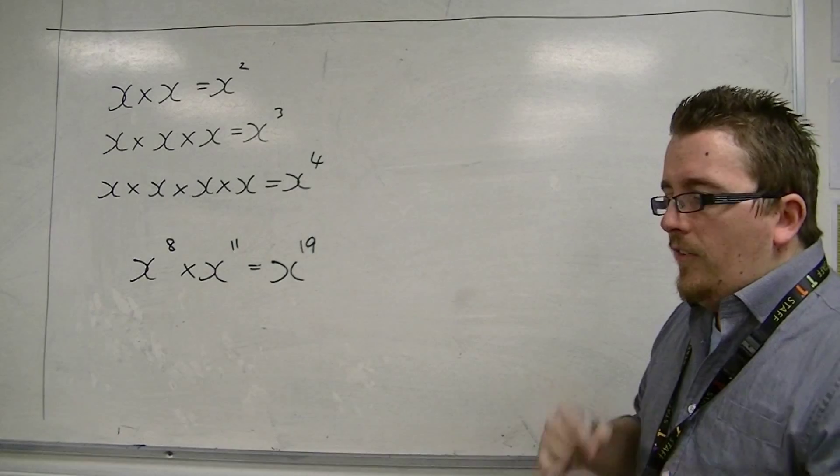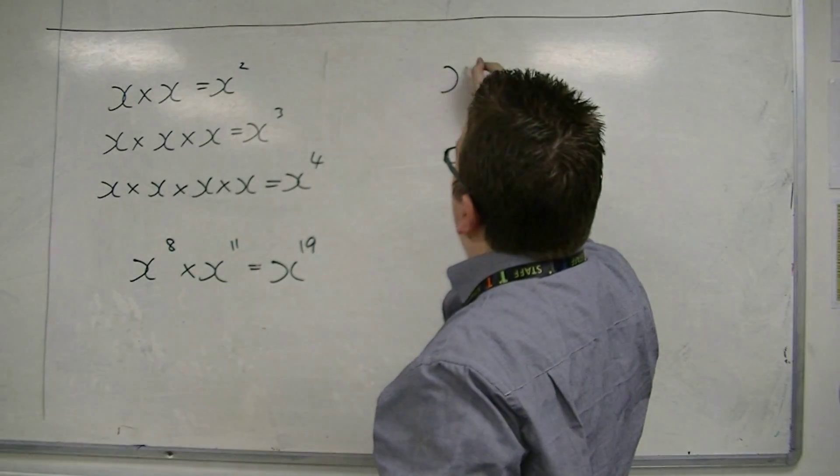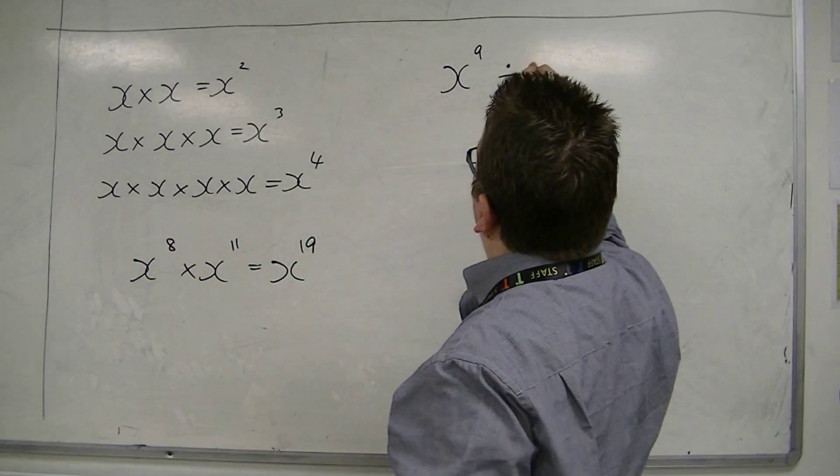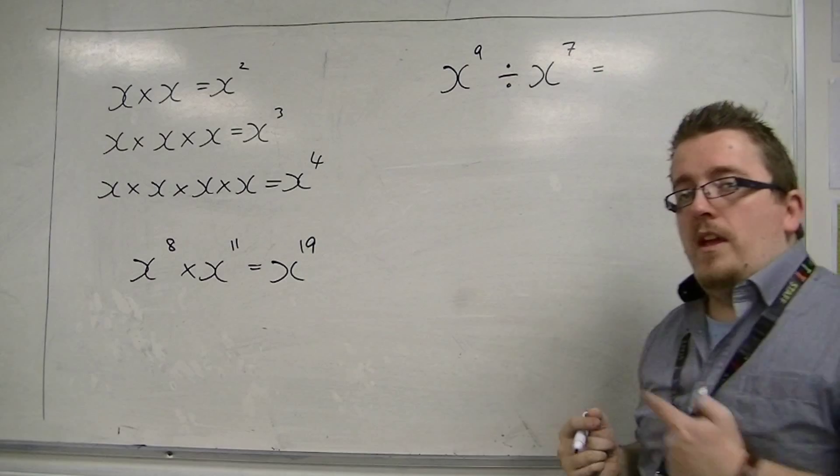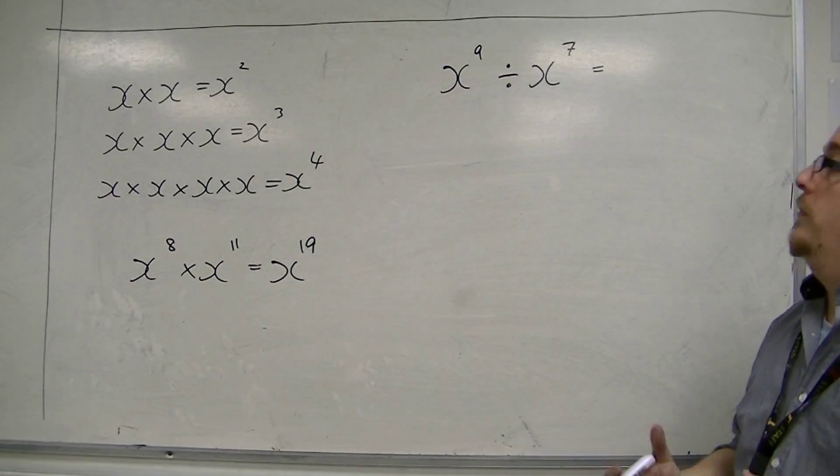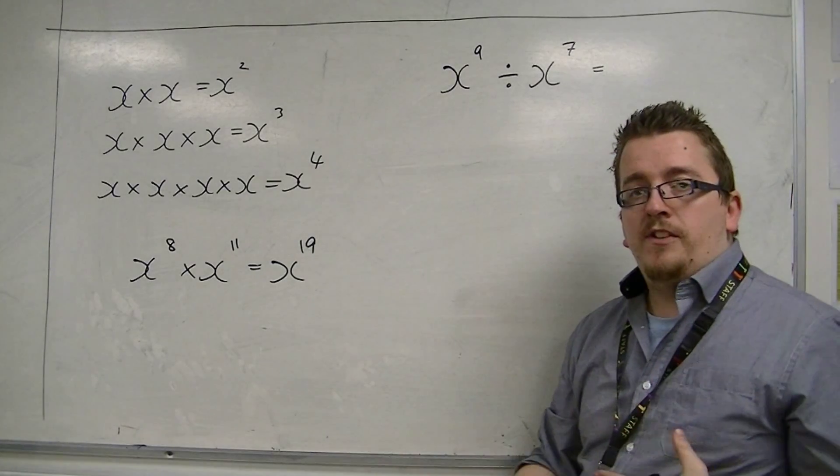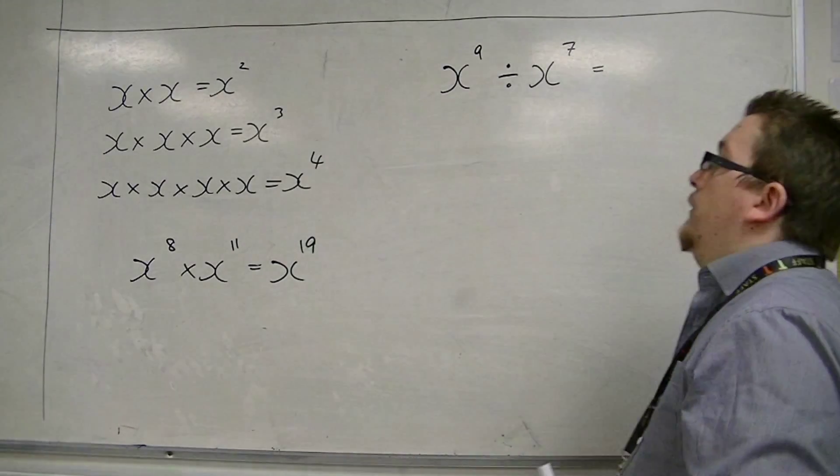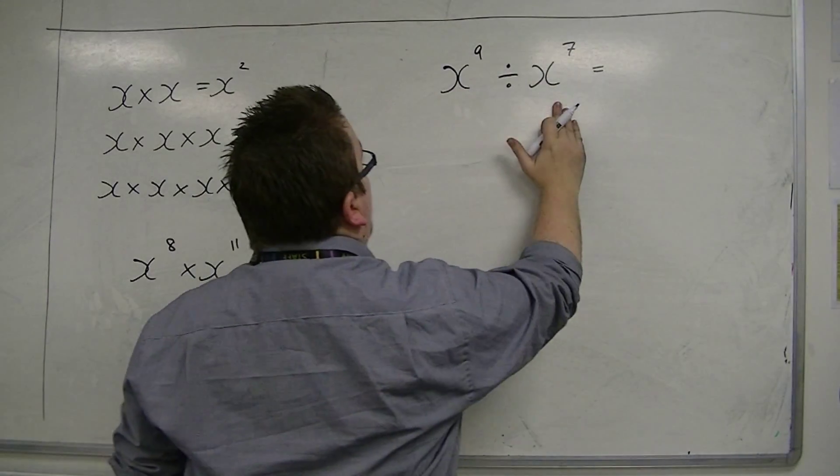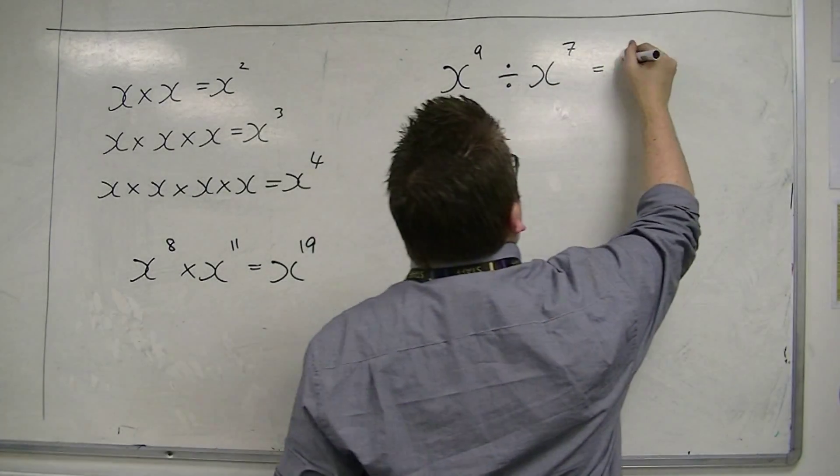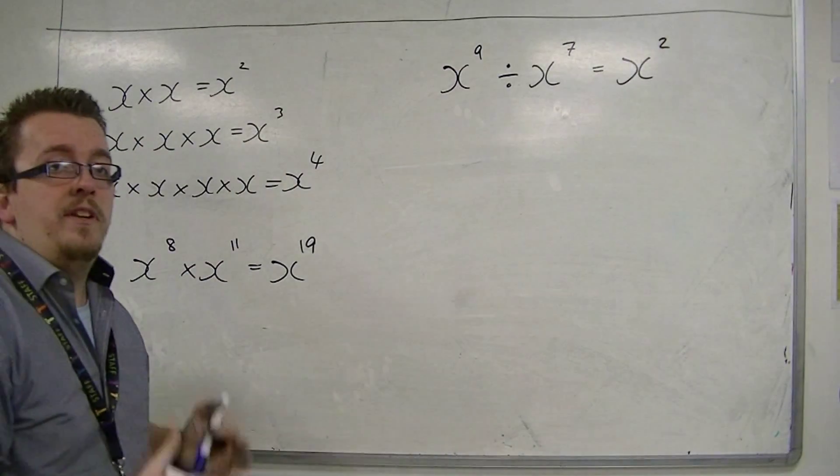So then it makes sense that if I am dividing instead, then the opposite would be true, or the reverse would be true. So if I'm dividing, then I must subtract the powers. So x to the 9 divided by x to the 7 would be x squared. 9 take away 7 is 2.